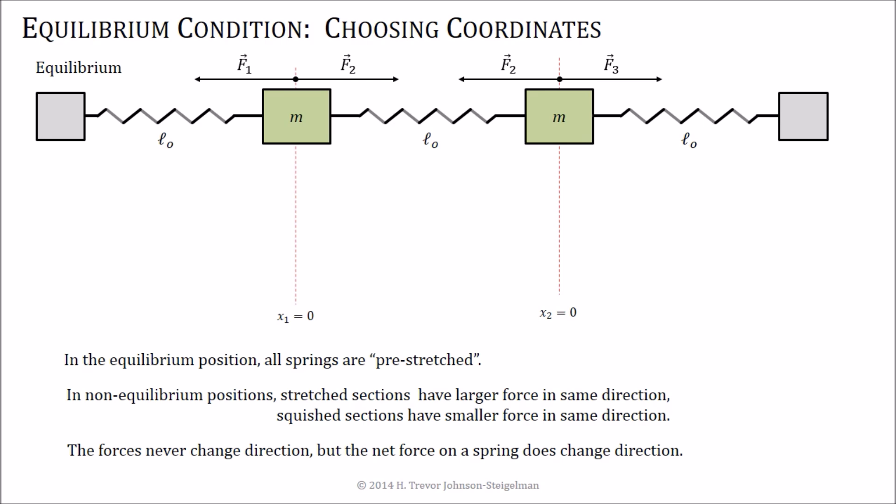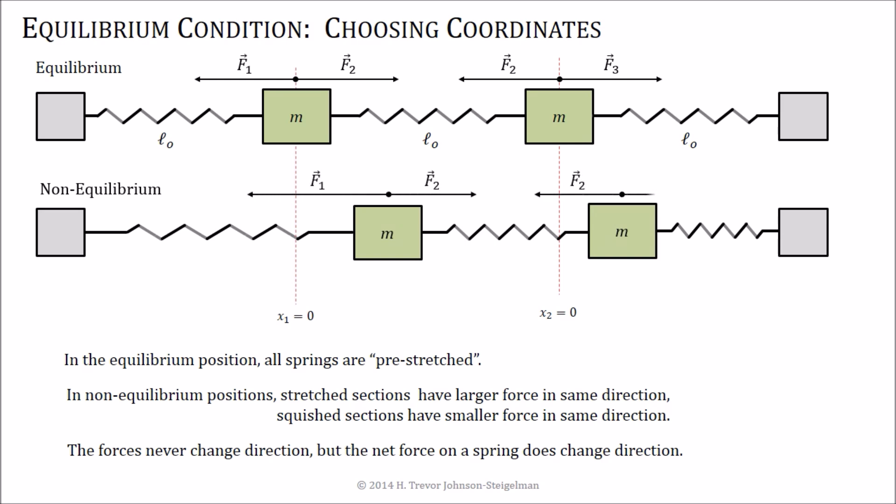If we look at it at a slightly different position, this time the forces have changed because each of the springs is pulled a little bit further or squished a little bit further. So in these non-equilibrium positions, the stretched parts have a larger force, but it's in the same direction as it was before. And in these squished parts, the forces are smaller than they were before. Of course, spring 2 has the same force on each side, which is not necessarily the same as it was up above.